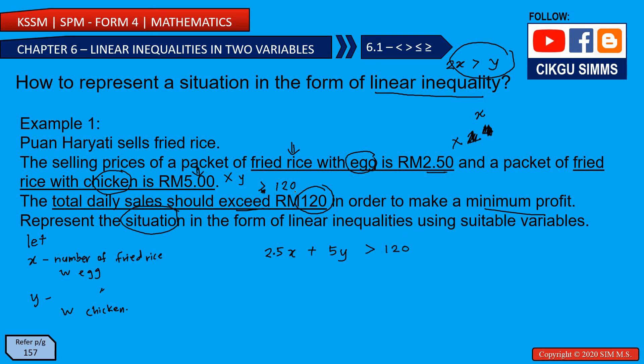Check the units — make sure everything is in ringgit. If the question uses cents, convert accordingly. So the linear inequality is 2.5x + 5y > 120. We are not using the equal sign here; we are dealing with greater than, smaller than, greater-or-equal, or smaller-or-equal.